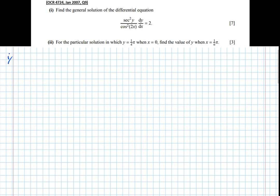So part one, it asks us to find the general solution of the differential equation. And it's always good practice to copy out the initial equation that we're given: sec squared y over cos squared of 2x dy by dx equals 2.